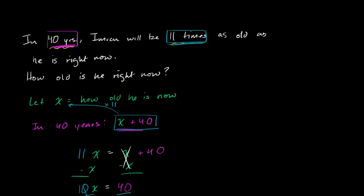So the answer: Imran is 4 years old right now. Let's verify: if he's 4 years old now, in 40 years he'll be 44 years old. And 44 is indeed 11 times 4, so it all worked out.